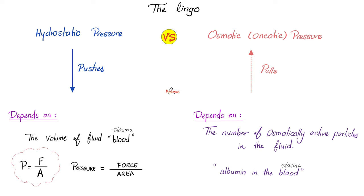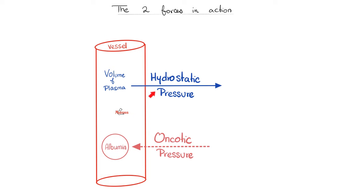Hydrostatic pressure depends on the volume of fluid. Conversely, osmotic pressure depends on the number of osmotically active particles — i.e., albumin. The more albumin you have, the greater your osmotic pressure. So here is a lovely blood vessel. The hydrostatic pressure of the vessel will push fluid away from the vessel — that depends on the volume of plasma inside. The oncotic pressure of the vessel will pull fluid towards the vessel, and this depends on osmotically active particles, specifically albumin.